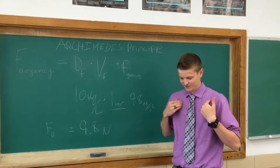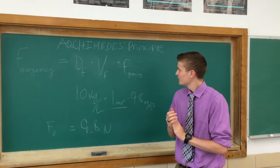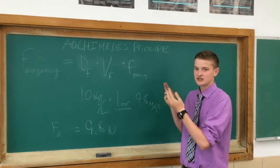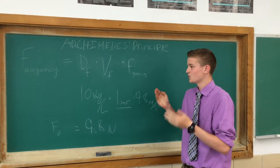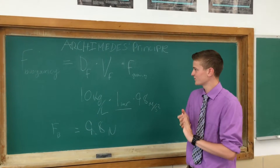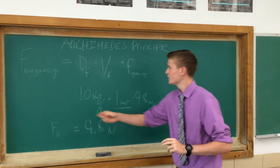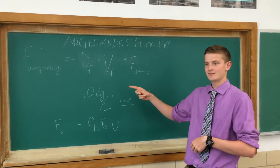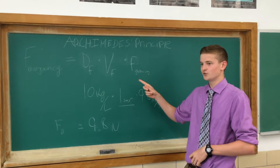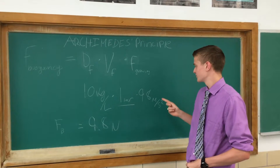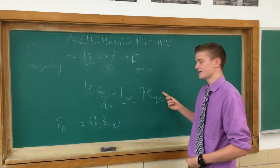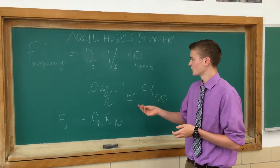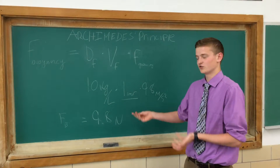I'm back again in a different outfit. Today we'd like to understand and explain Archimedes' principle, also known as buoyancy. Thanks to Archimedes, we know the buoyant force is equal to the density of the fluid times the volume of the fluid times the force of gravity, which in our case is 9.8 meters per second squared. The density of water is 1 kilogram per liter.